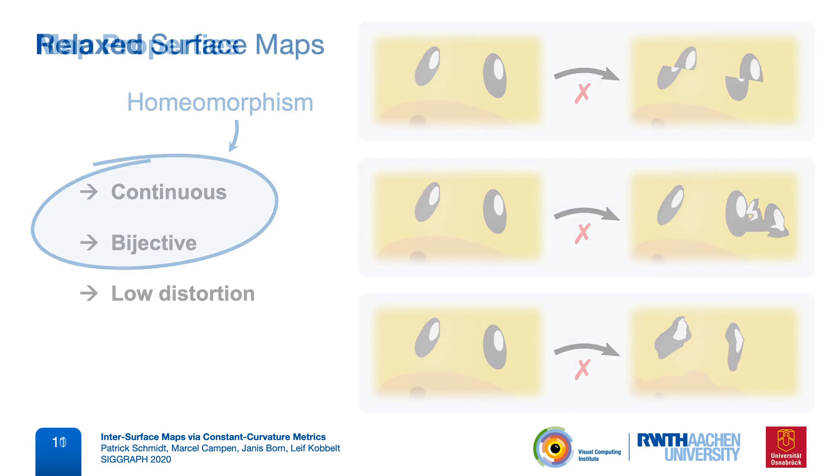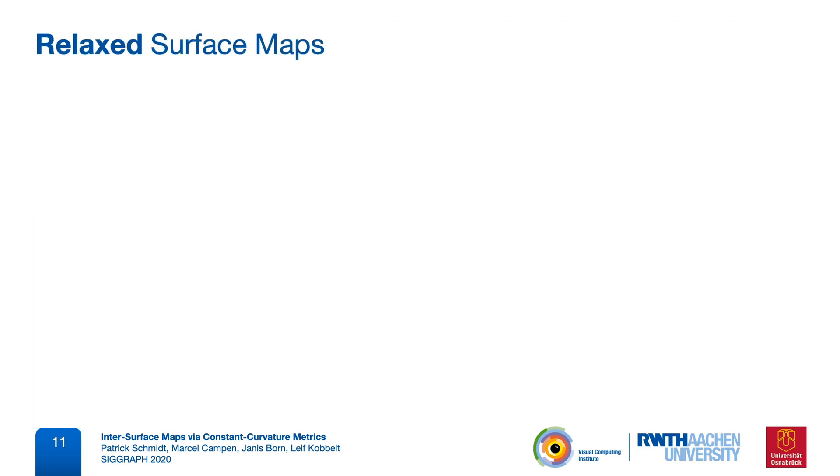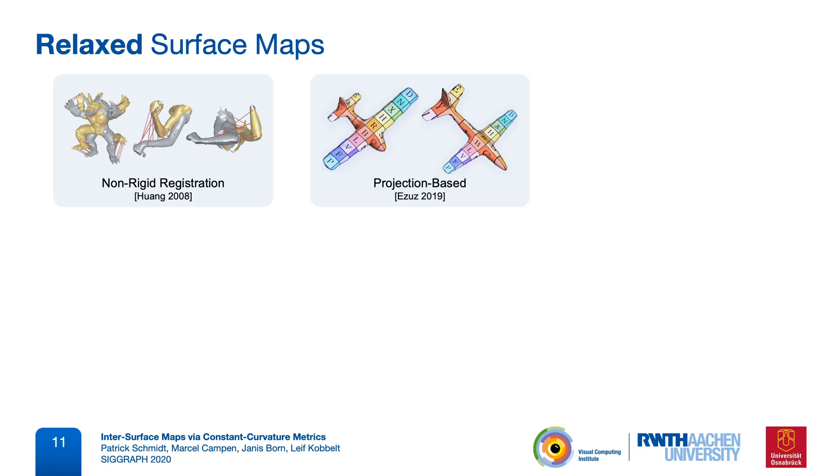Many existing methods use relaxed variants of this definition, which are simpler to represent or easier to optimize. For example, non-rigid registration or projection-based methods use an extrinsic approach, where a source mesh is deformed in 3D ambient space to match the target. Functional maps switch to a spectral representation, and then usually recover a map that is only defined at the vertices and without bijectivity guarantees.